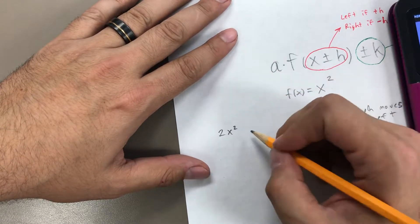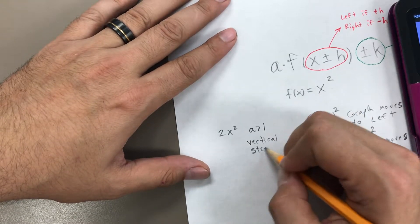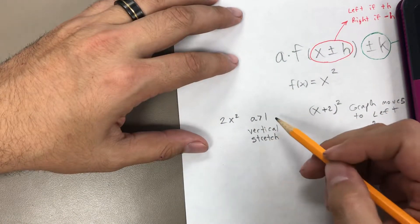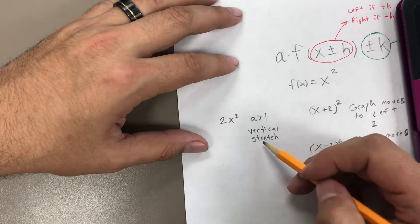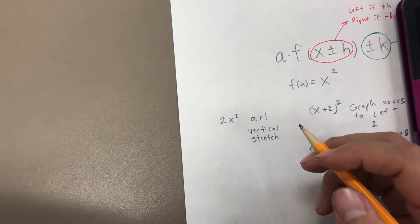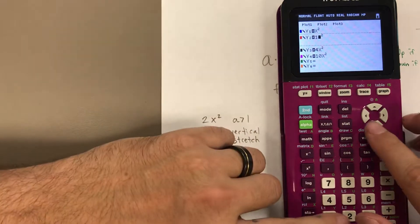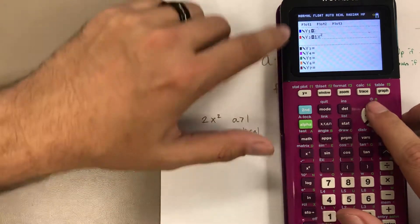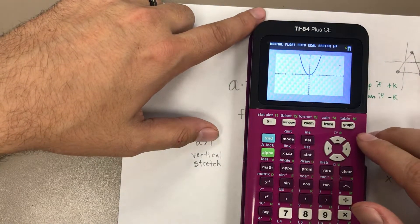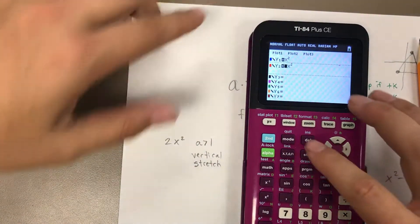We call that a vertical stretch. If this number A multiplying out front is larger than 1, the graph undergoes a vertical stretch. We say it has a vertical stretch of whatever factor is outside — so multiplying by 2 is a vertical stretch of factor 2, multiplying by 2.8 is a stretch of factor 2.8. We know what happens when A equals 1 — multiplying by 1 gives the same function. Sure enough, 1 times x squared graphs right over x squared — no change.